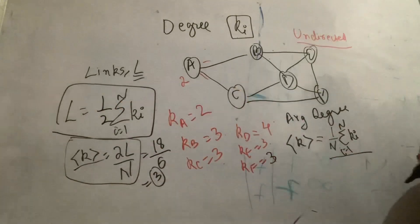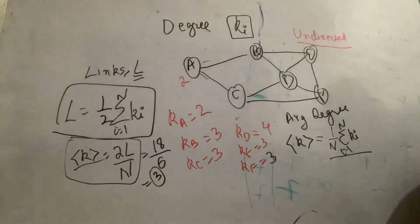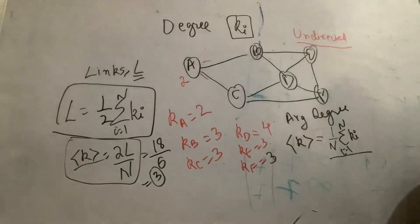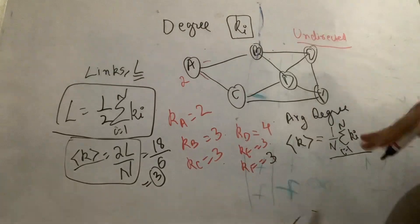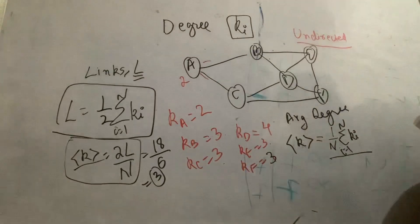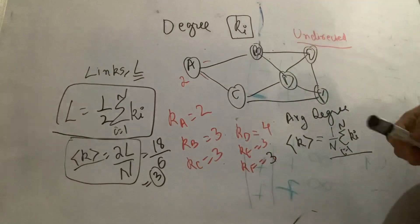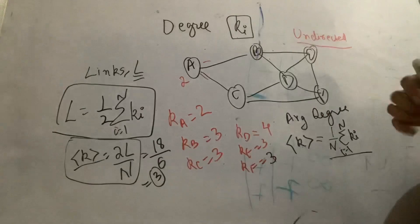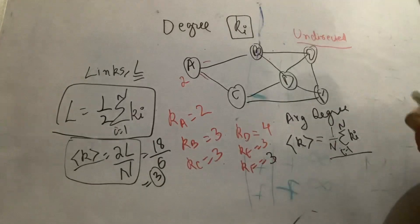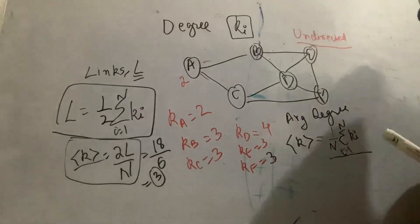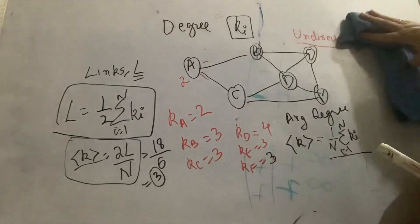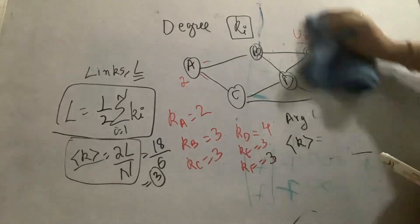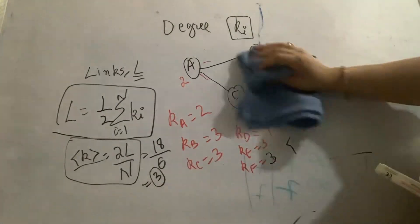Till here, are the formulas clear? Yes, ma'am. Now let us see the same for a directed graph. If it was not an undirected graph but becomes a directed graph, then what changes and how do we define the same terms?